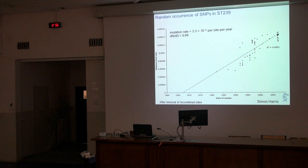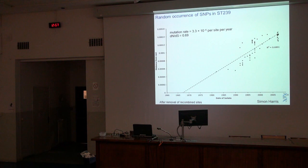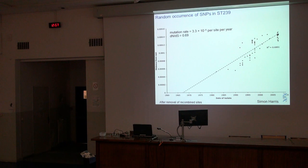So if we want to look for selection in these SNPs — we've got four and a half thousand SNPs in the core genome — we want to know if any of them are under selection or are neutral. The first thing we normally do is measure the dN/dS ratio: the ratio of non-synonymous to synonymous changes. If there are more non-synonymous changes than synonymous changes, you assume some form of positive selection. If dN/dS is very low, you assume purifying selection.